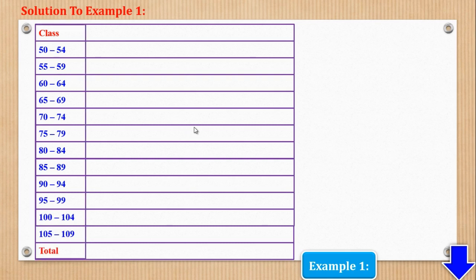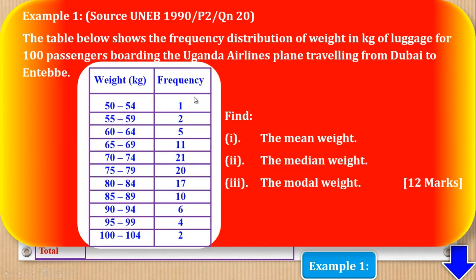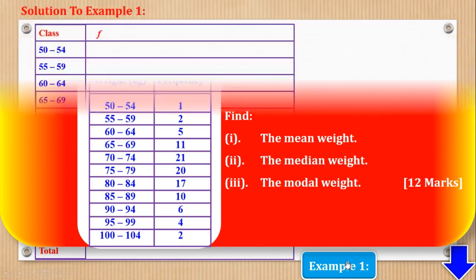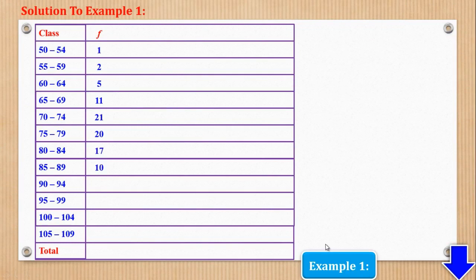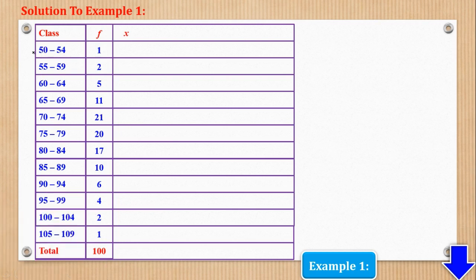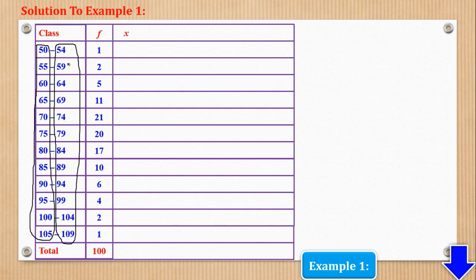Next is the frequency column. We put exactly the given frequency values. Then we go to x, which is the mid mark or class mark. To get x, you get the average of the lower and upper class limits for each class. So adding 50 and 54 and dividing by 2 gives 52; 55 and 59 gives 57; 60 and 64 gives 62; 65 and 69 gives 67; and so on up to 72, 77, 82, 87, 92, 97, 102, and 107.